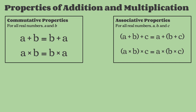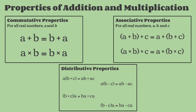The next one is the associative property, which basically states that no matter how you group your numbers in an equation, you'd still have the same outcome. And this is only for addition and multiplication.